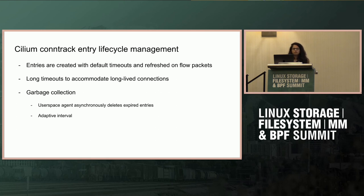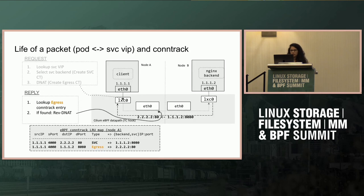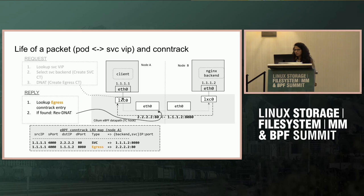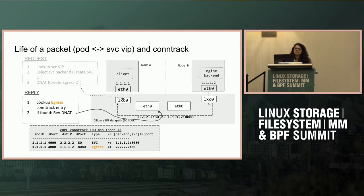Martin asks a question: for the request path where 1.1.1.1 is trying to connect to 1.1.1.2, and the TC program is trying to rewrite it — instead of inserting an entry into the hash table or LRU map, is it possible to store something in the socket local storage in the client socket? The speaker replies: hold that thought, I'm coming to it.